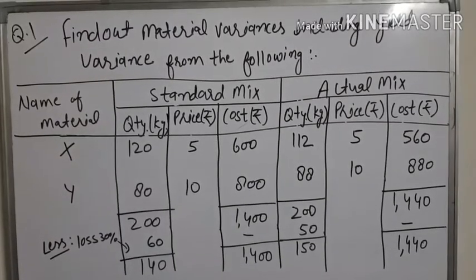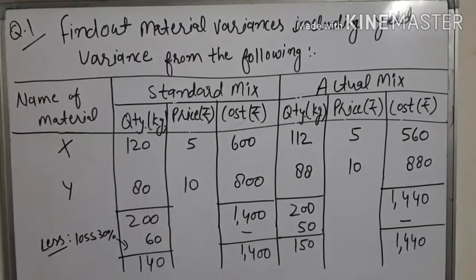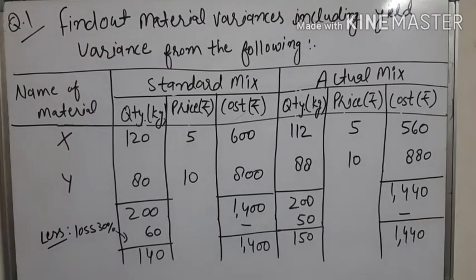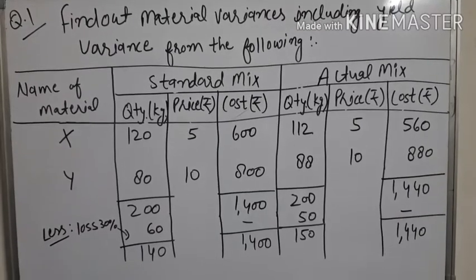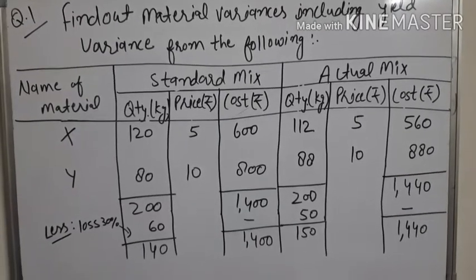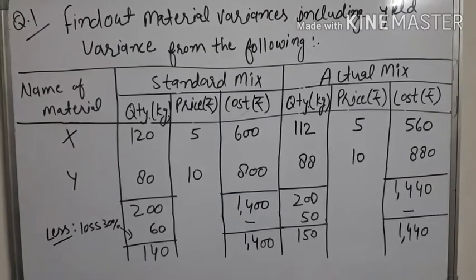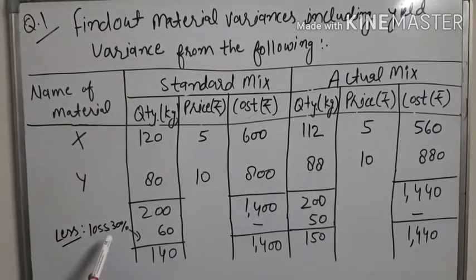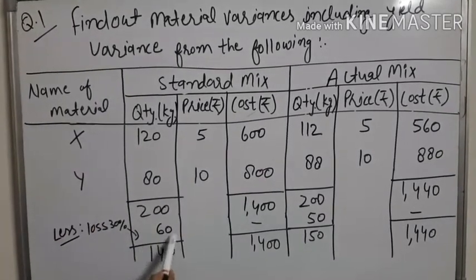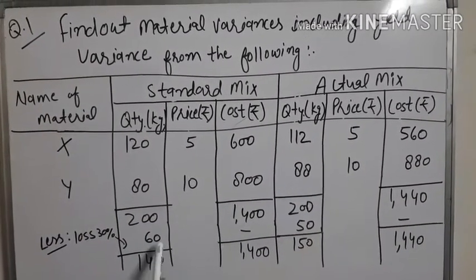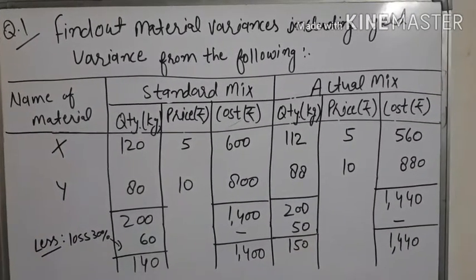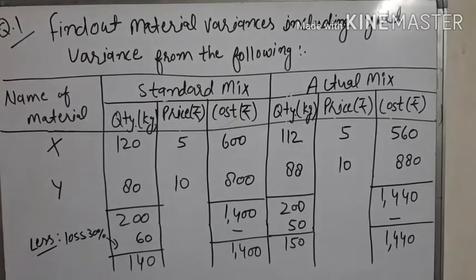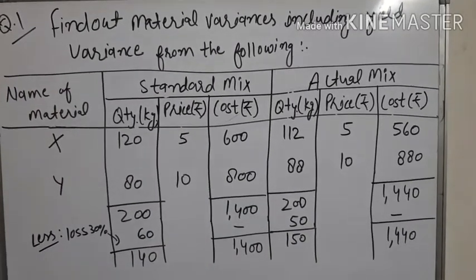Hello everyone. This is a problem of material yield variance. In this question, all data are the same as previous questions, but the change is this: here are two materials and loss is given on both sides. If the loss is given in the question, then it is a question of material yield variance.